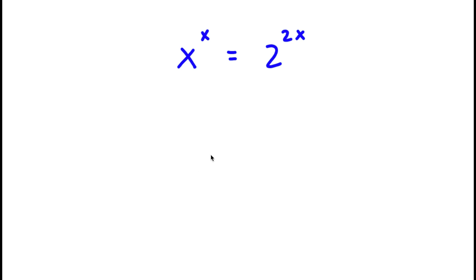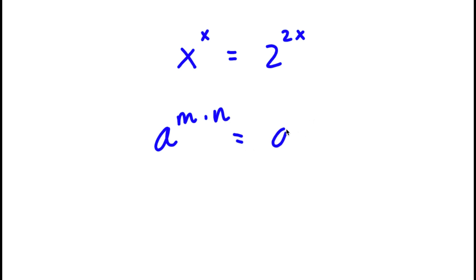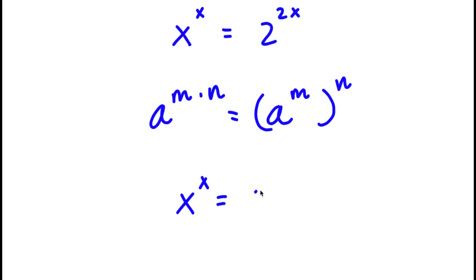Welcome back to Click Academics. In today's video, I'm going to be teaching you how to solve this exponential equation. I have x to the power of x is equal to 2 to the power of 2x. If I have something in the form a to the power of m times n, this is the same thing as a to the power of m to the power of n. So 2 to the power of 2x, I'm going to rewrite that as 2 to the power of 2 to the power of x.